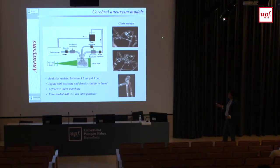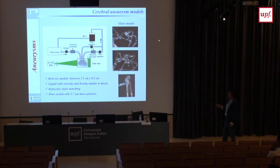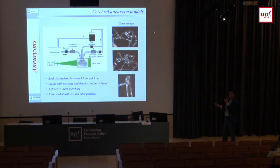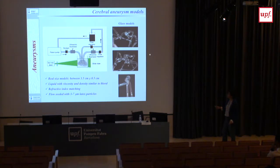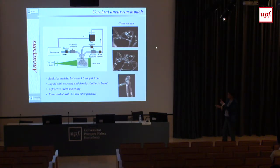The first application on biological flows we started was aneurysms. These are three patient-specific models. We had clinical MRI images and gave the 3D representation to the glass blower, who built the three models. The one on the bottom is 3.5 cm — it was in someone's head. The one in the middle is about 1 cm, and the one above is about half a centimeter. The smallest one we were never able to measure due to many bubbles in the glass around it, so we mostly studied the lower two.